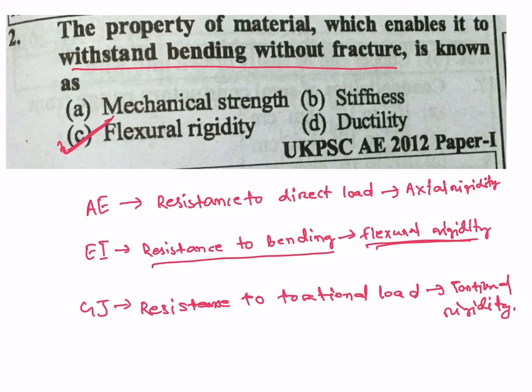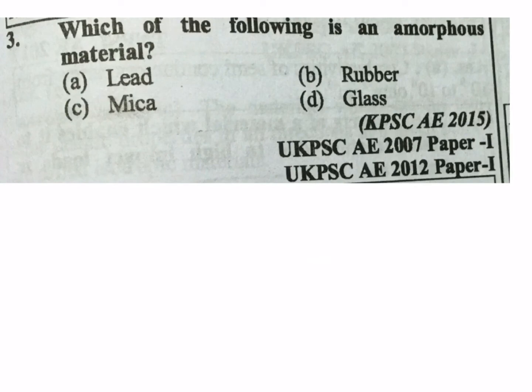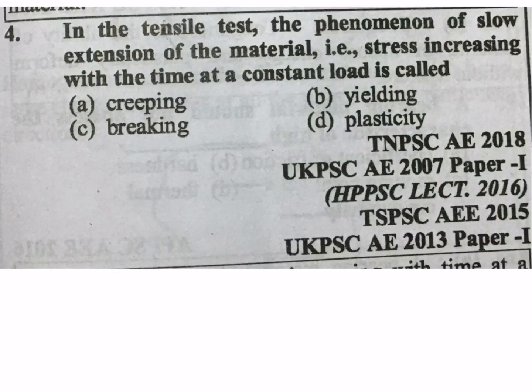Resistance against bending is flexural rigidity. Next question: which of the following is an amorphous metal? Options: lead, rubber, mica, glass. Glass is the amorphous metal, so the answer is D.